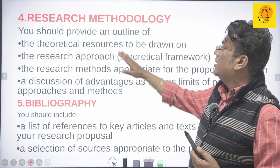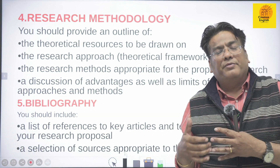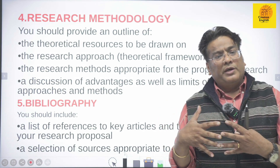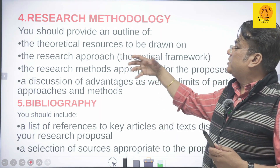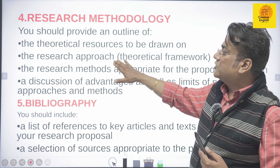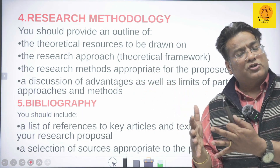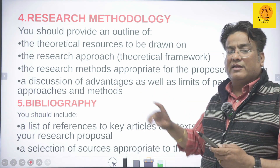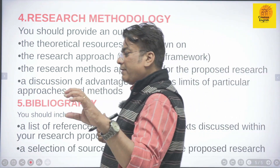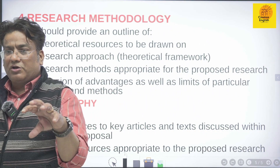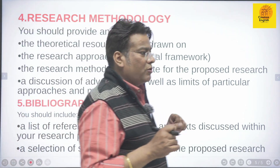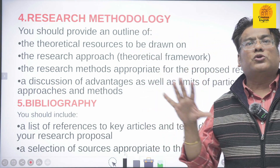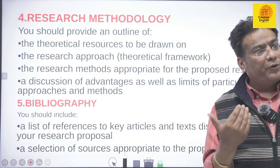The fourth element is research methodology — how will you do your research? You should provide an outline: I will go to the library, use these research tools, analyze them, and draw on theoretical resources. Discuss what your research approach will be, how you will reach and handle the topic, and include a discussion of the advantages as well as the limits of your particular approaches and methods. Your methodology should cover different sources — hard copies, internet libraries, social media — and explain how you will collect and incorporate materials.